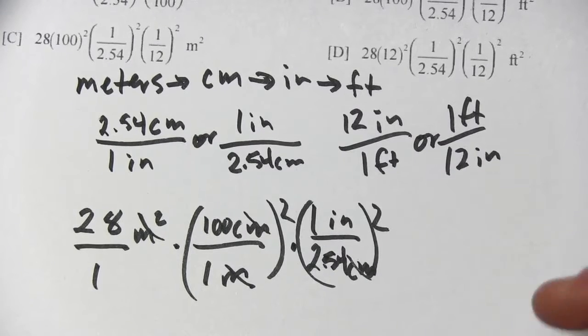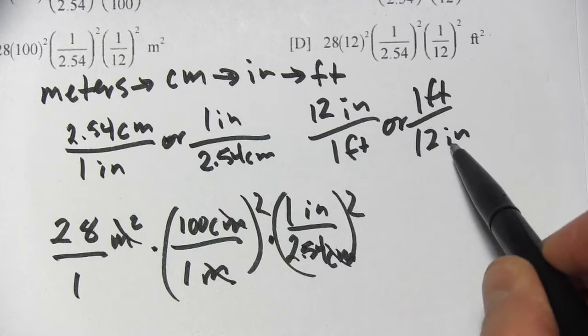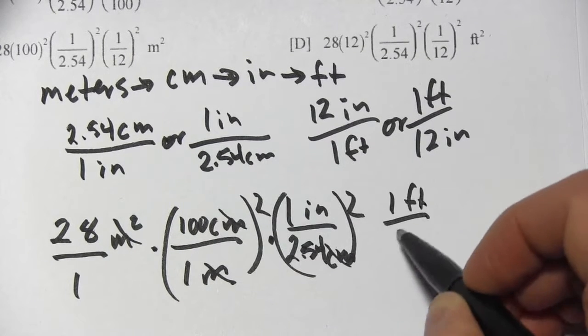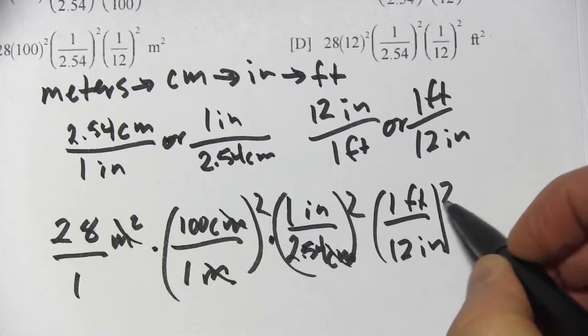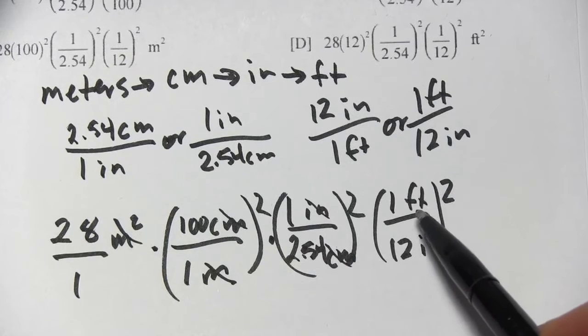Those centimeters will cancel. And now we want to get to feet. I've got inches on top. So I want inches on the bottom. So I'll use this one. So that is 1 foot per 12 inches. And that gets squared. The inches cancel. Aha. And we're left with feet.